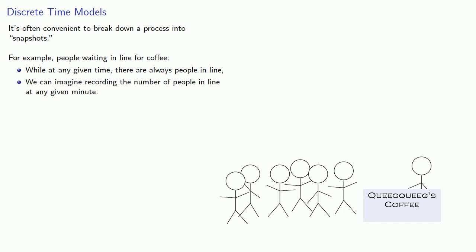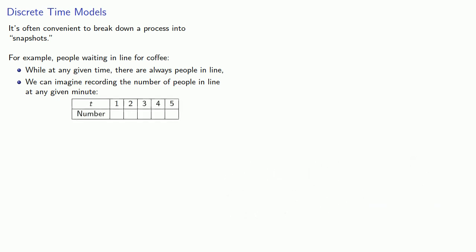For example, we might get data like this. At t equals one minute, we take our picture and we see there's eight people in line.